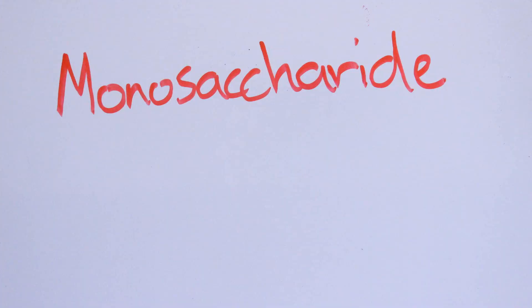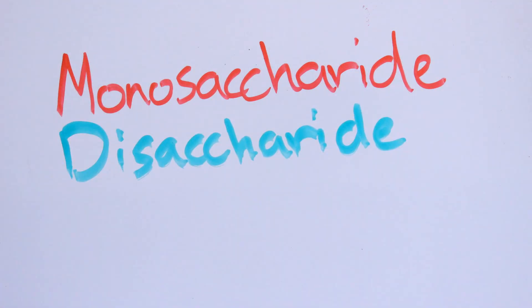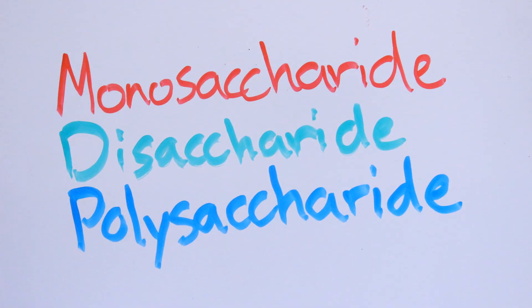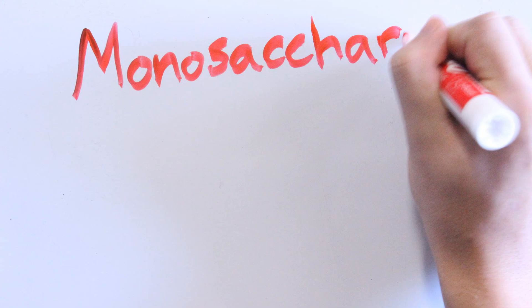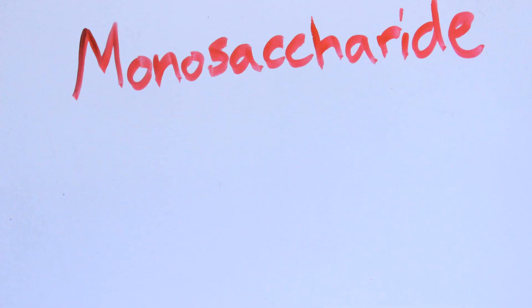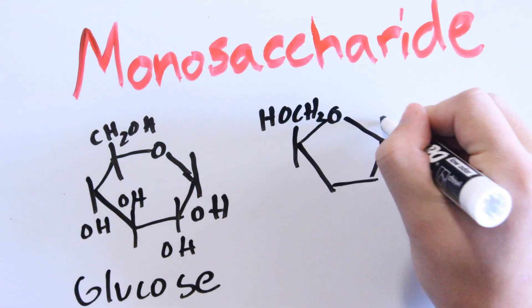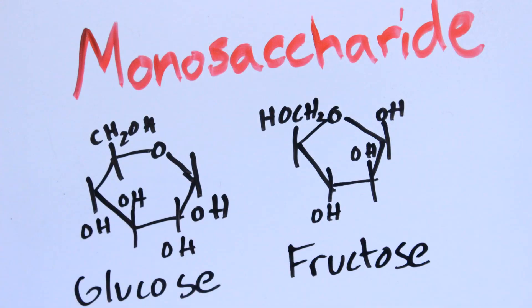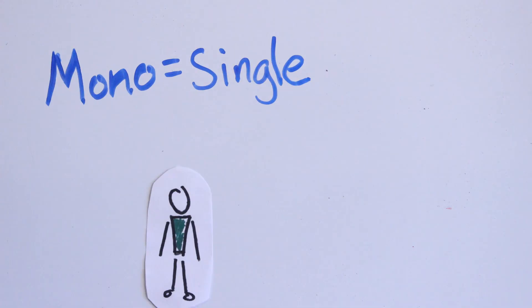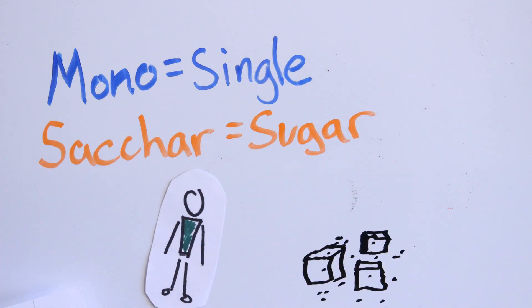Carbohydrates can be divided into three main groups: monosaccharides, disaccharides, and polysaccharides. Monosaccharides are the most basic carbohydrates — they are the simple forms of sugar, such as glucose and fructose. A great way to remember this is to understand the parts of the name: mono meaning single, and sacchar meaning sugar.